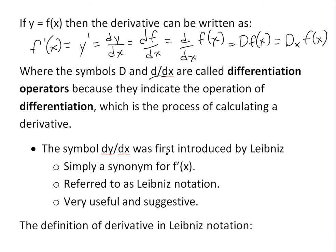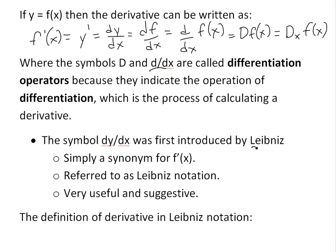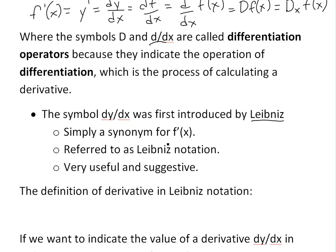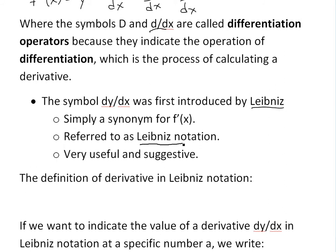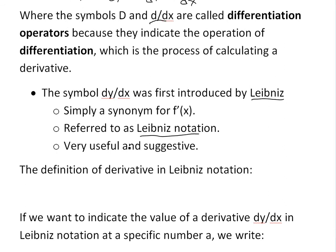The symbol dy over dx was first introduced by Leibniz — I think that's how you pronounce it. It's basically a synonym for f prime of x, or the derivative, and it's referred to as Leibniz notation. It's very useful and suggestive because it just looks like it should be right. And especially when you get into higher calculus, you'll see a lot of this Leibniz notation.